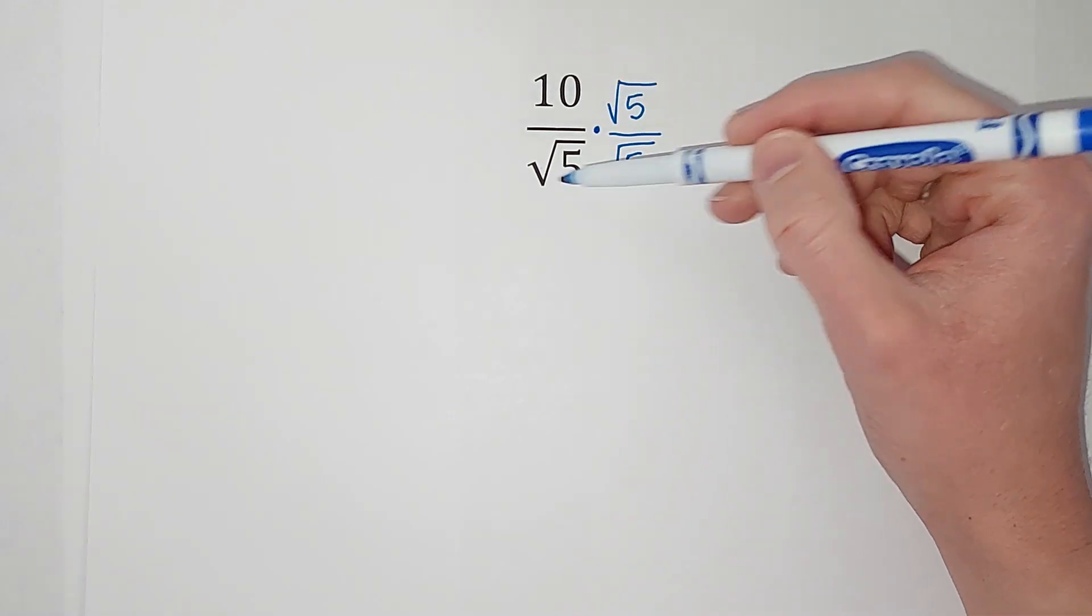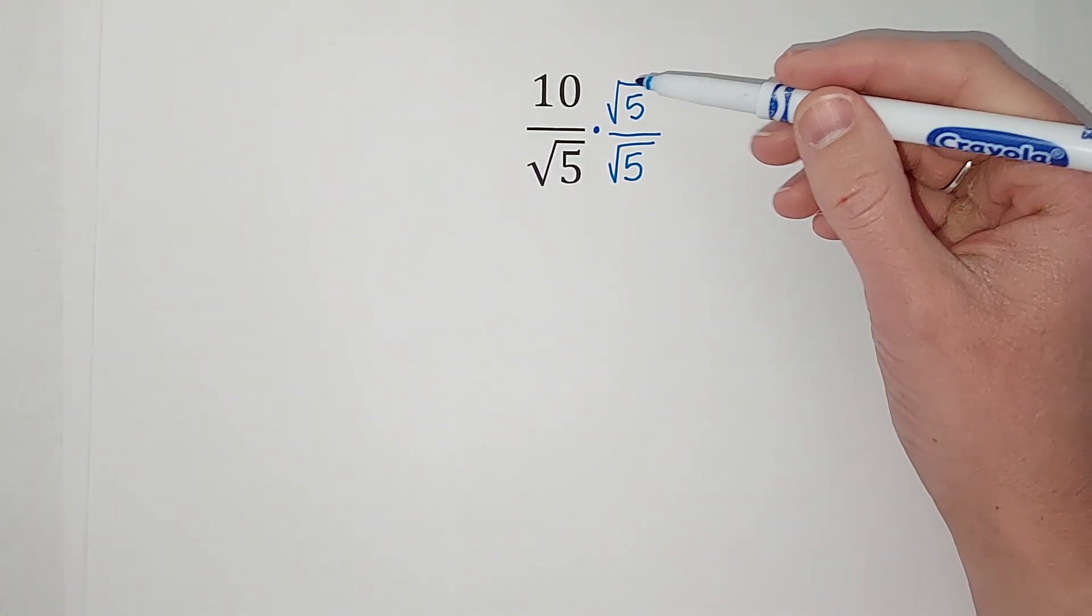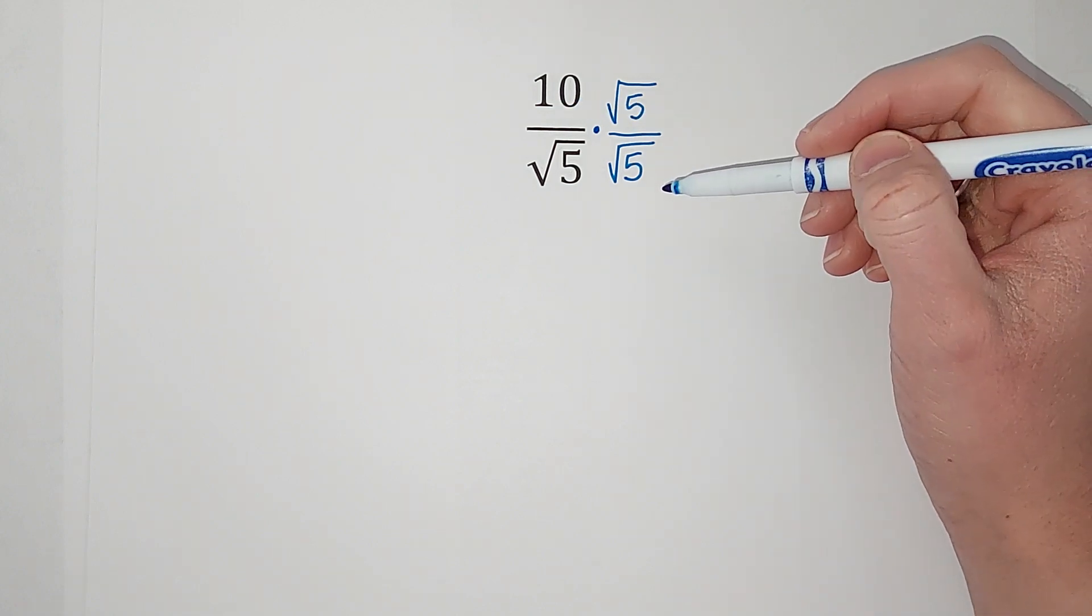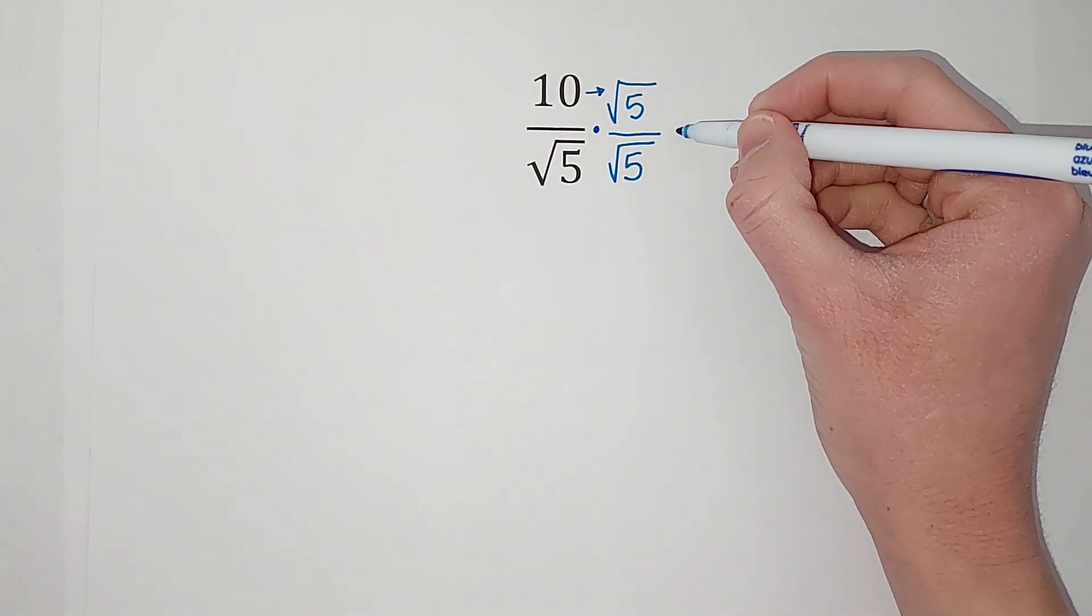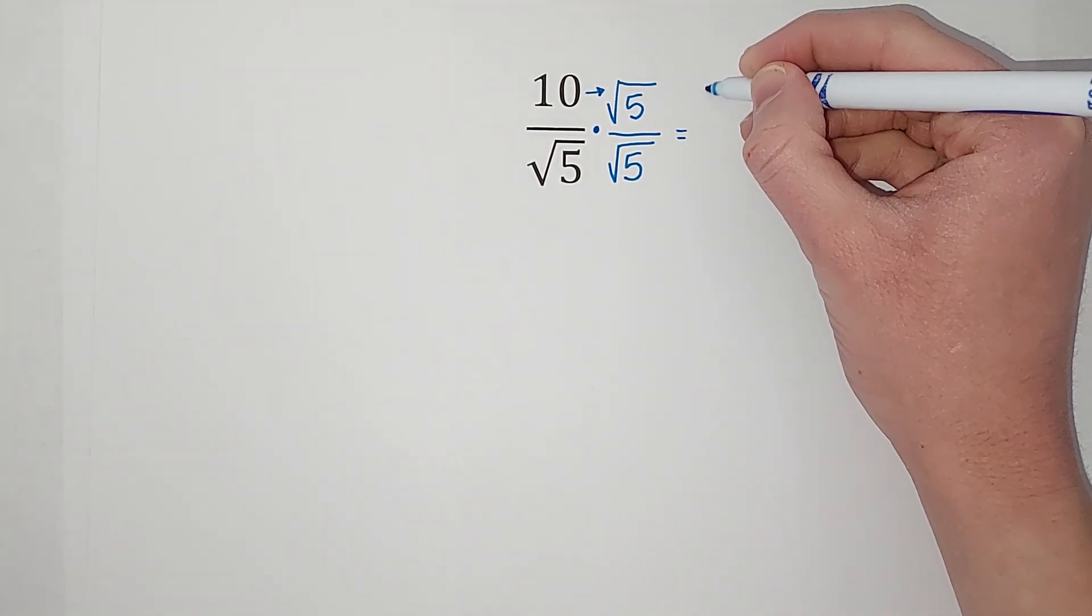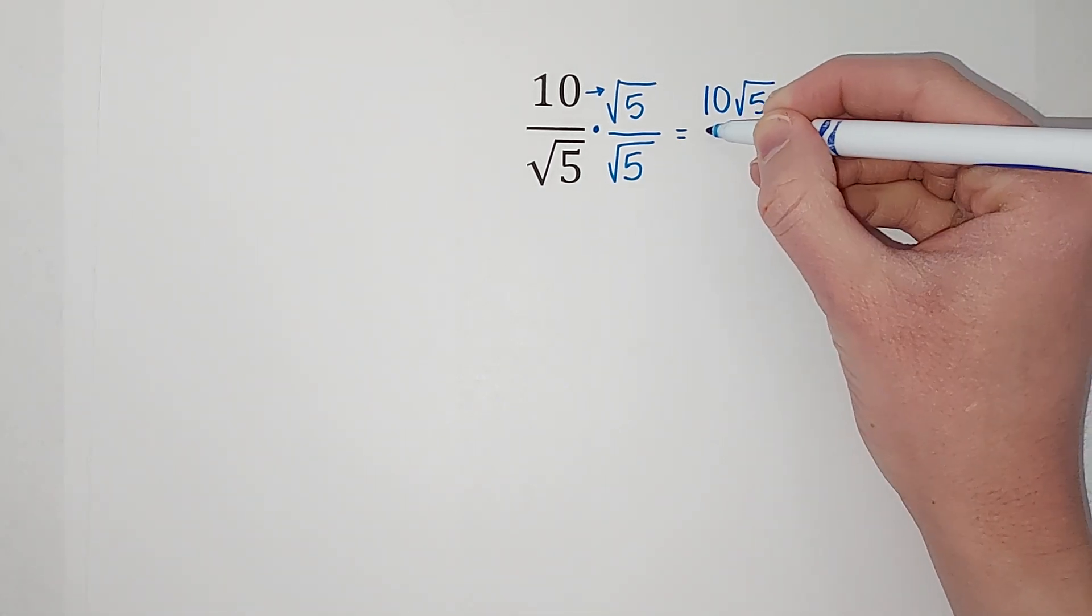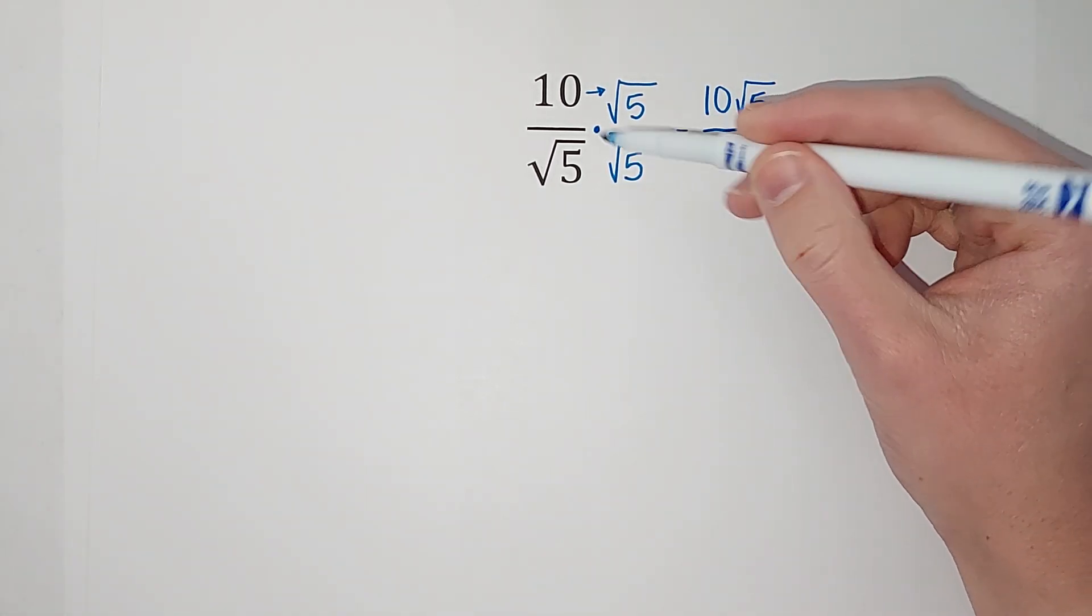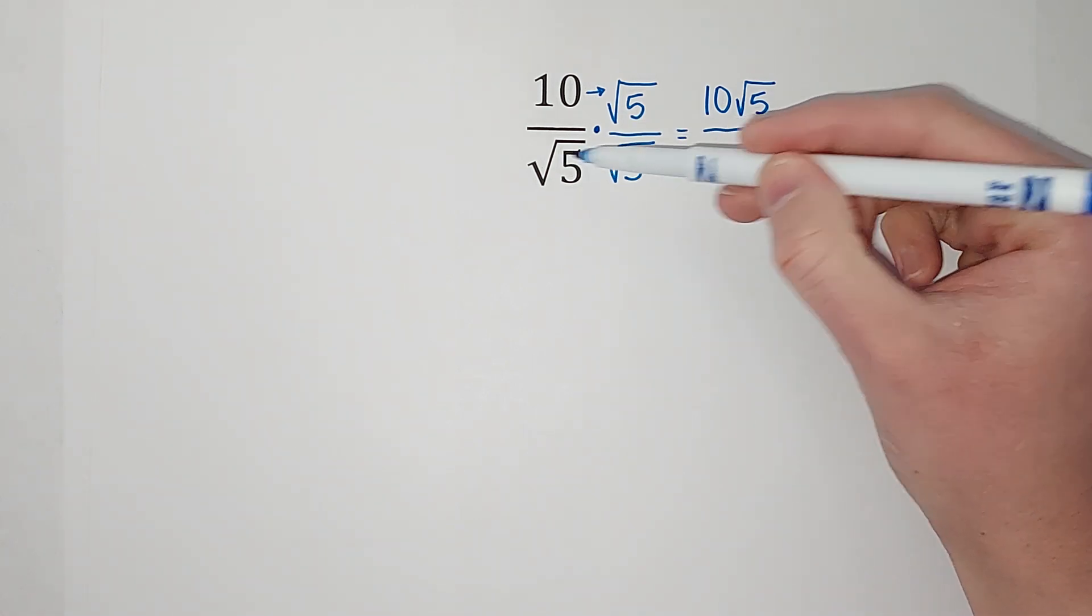So I'm changing what this fraction looks like but not its actual value. Watch what happens when I do this. We are going to multiply straight across - that's how we multiply fractions. So I get 10 square roots of 5 on top, and on the bottom, when I multiply two radicals, the radicals cancel.